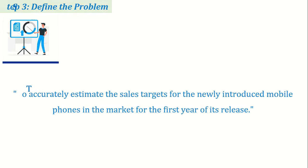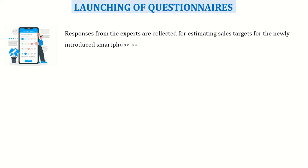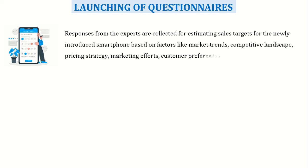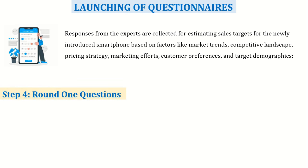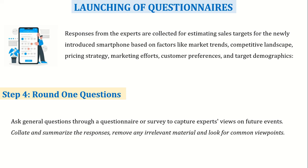Now we come to the practical exercise of questionnaires. Responses from the experts are collected for estimating sales targets for the newly introduced smartphone based on factors like market trends, competitive landscape, pricing strategy, marketing efforts, customer preferences, and target demographics. In round one, you ask general questions through a questionnaire to capture experts' views on future events. After that, collate and summarize the responses, remove any irrelevant material, and look for common viewpoints.